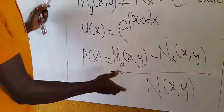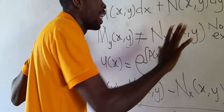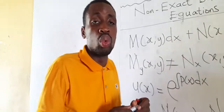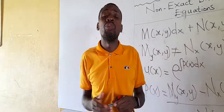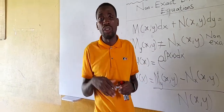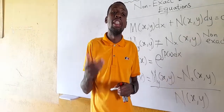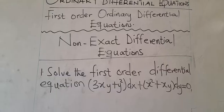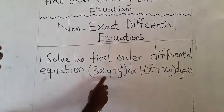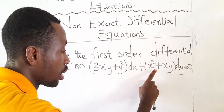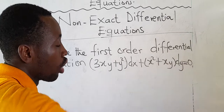After we get P(x), we find the integrating factor, then multiply it through the non-exact equation so it becomes exact. We then follow the procedure for solving exact equations. Let's take an example so you can grasp the concepts. Let's solve the first-order differential equation: (3xy + y²)dx + (x² + xy)dy = 0.